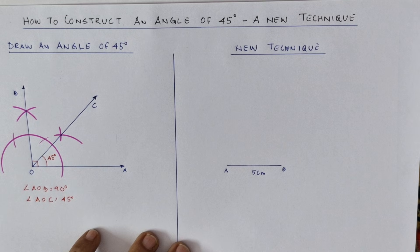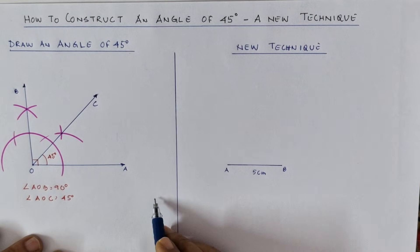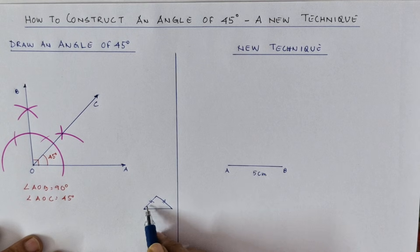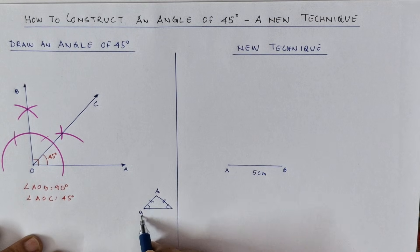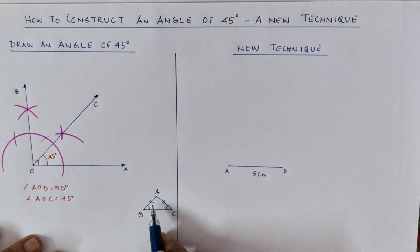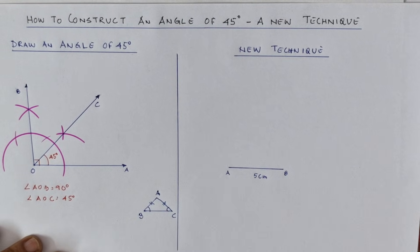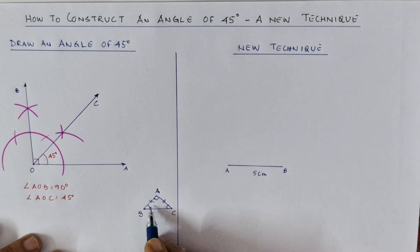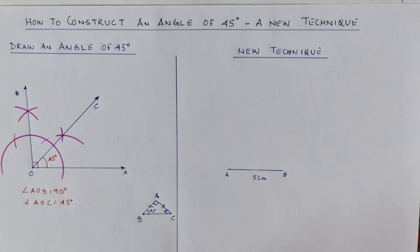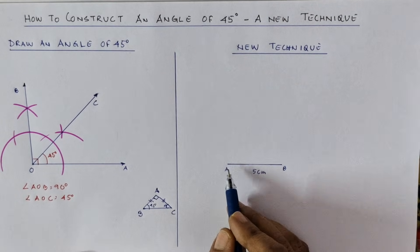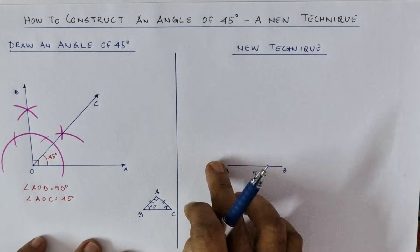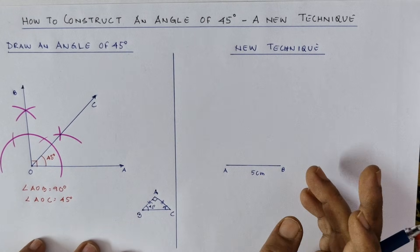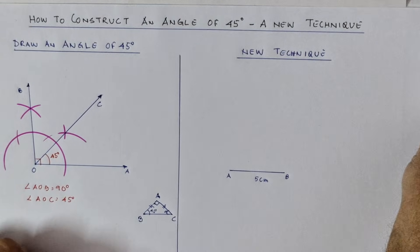We will use the concept of an isosceles triangle. In an isosceles triangle, two sides are equal and the base angles are equal. So if triangle ABC has AB equal to AC, then angle ABC equals angle ACB. If we mark the apex angle as 90 degrees, this automatically makes both base angles equal to 45 degrees each. Our intention is to draw a 90-degree angle, mark five centimeters, and the triangle formed will be an isosceles triangle with base angles of 45 degrees.